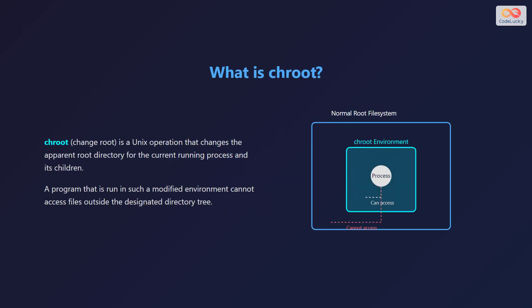chroot, also known as ChangeRoot, is a Unix operation that changes the apparent root directory for the current running process and its children. Imagine a program run in such a modified environment — it cannot access files outside the designated directory tree. It's like creating a walled garden for specific processes.